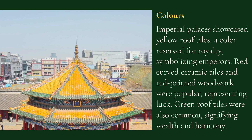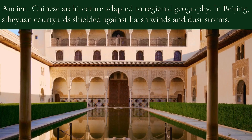In addition to this, the red color was used on wood. The green roof tiles were also common, signifying wealth and harmony. The green color was also applied to wood, representing wealth and harmony.